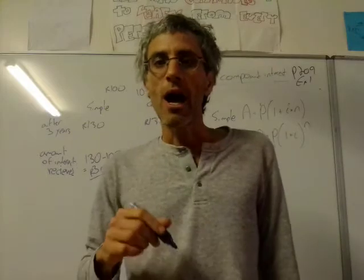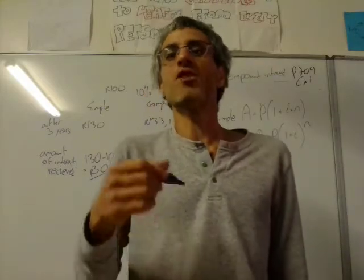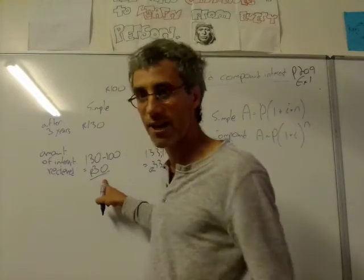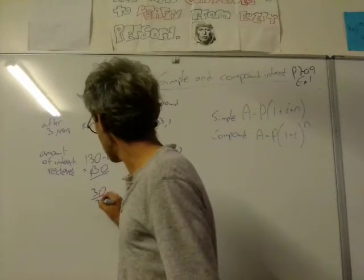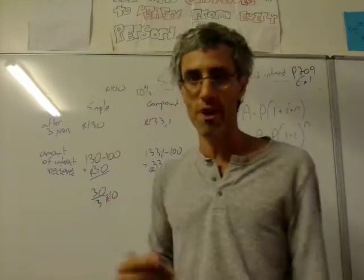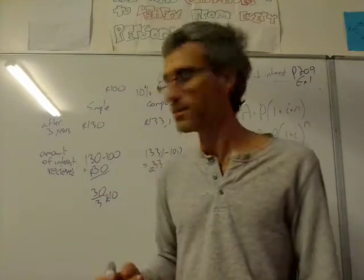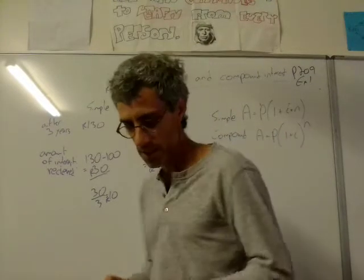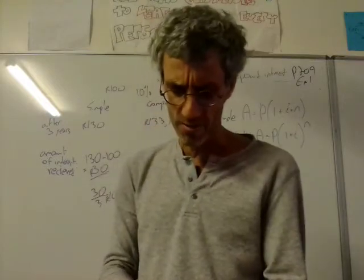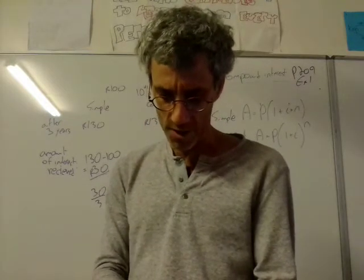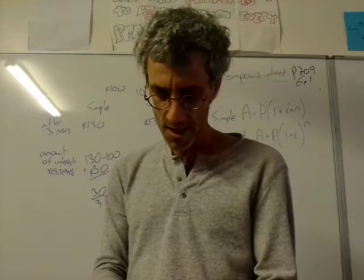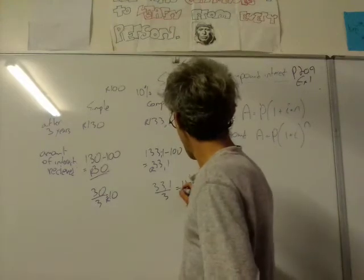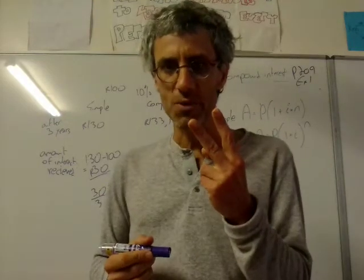Now they might ask me how much interest did I make per year. In this case, I made 30 Rand in three years, so every year I made 10 Rand. And that's absolutely true. Every year I made an extra 10 Rand. Over here, 33.1 over three years, we need my calculator, and it's going to be 11 point something. 33.1 divided by three is 11.03 Rand. We normally will work with two decimal places, because that's cents.